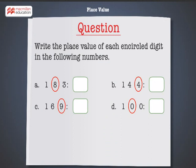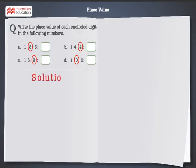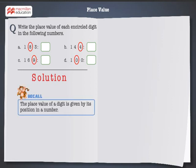Write the place value of each encircled digit in the following numbers. Let's recall that the place value of a digit is given by its position in a number.